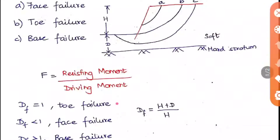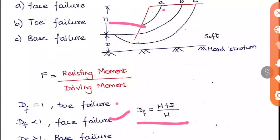The depth factor d_f is defined as (h + d) / h, where h is the height of the slope and d is the depth to the hard stratum. For face failure, d_f is less than 1 because the failure surface doesn't reach full depth. For toe failure, d = 0 so d_f = h/h = 1. For base failure, d_f is greater than 1.